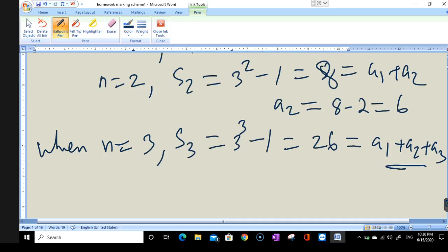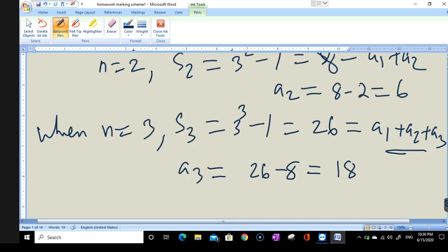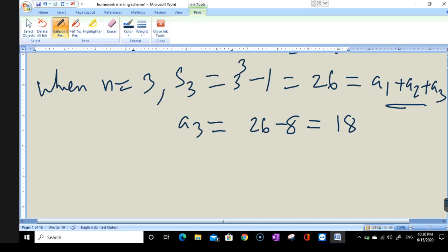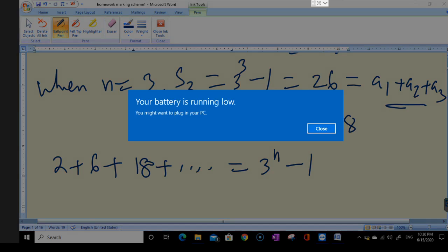So the series now will be 2 + 6 + 18 + ... = 3^n - 1. The testing point now is: we are going to test whether there is a common ratio or not.